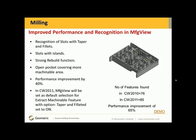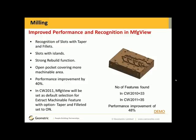Again, AFR did not find any features. In CamWorks 2010 Manufacturing View, it found 76 features. In CamWorks 2011, Manufacturing View found 85 features. And look at the performance improvement on this part — 65%. Let's take a look at another example.